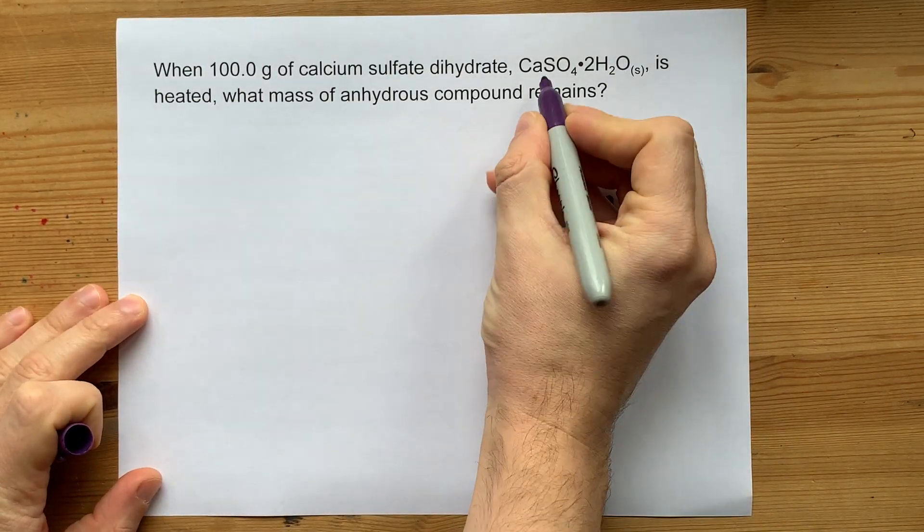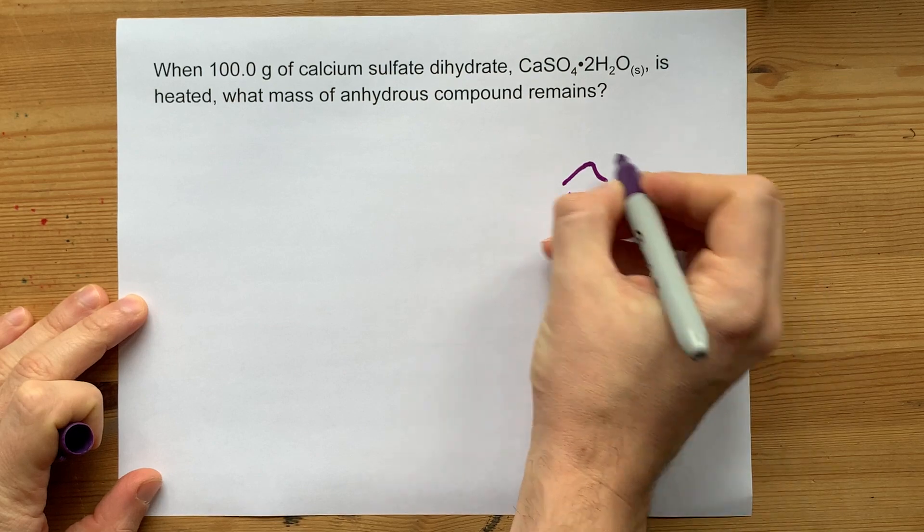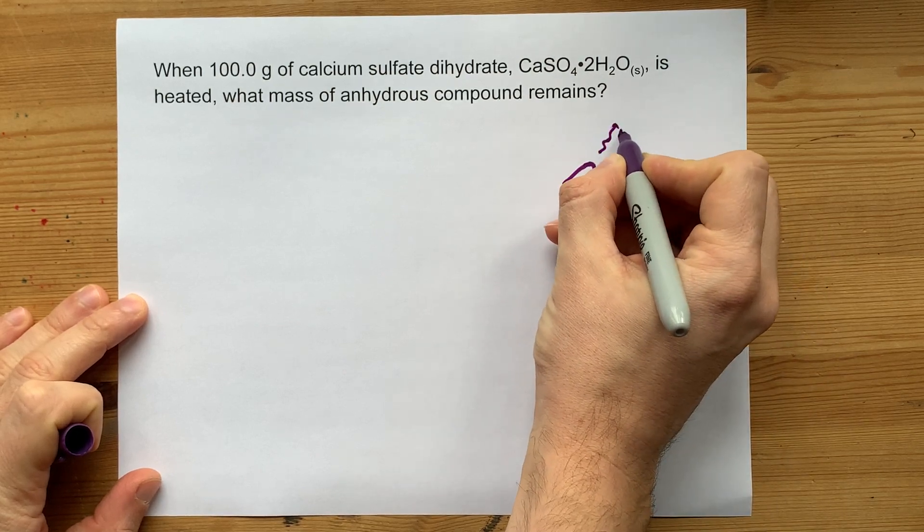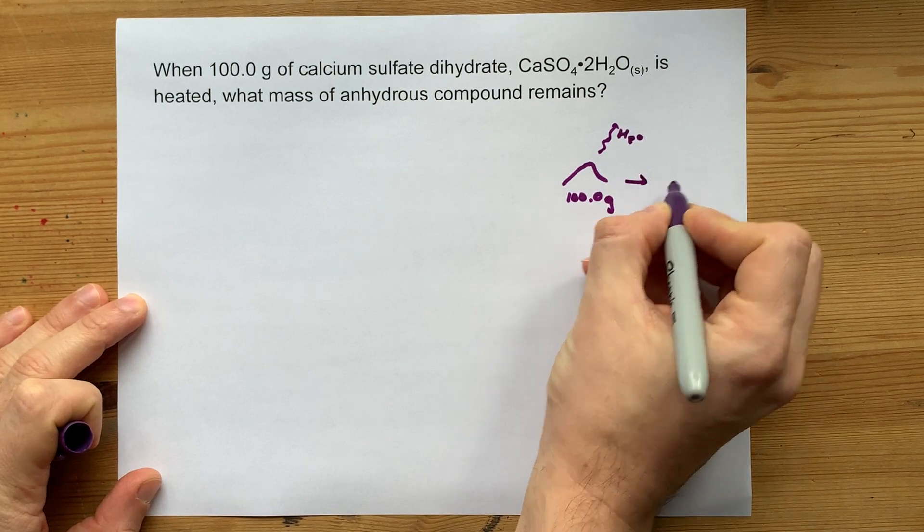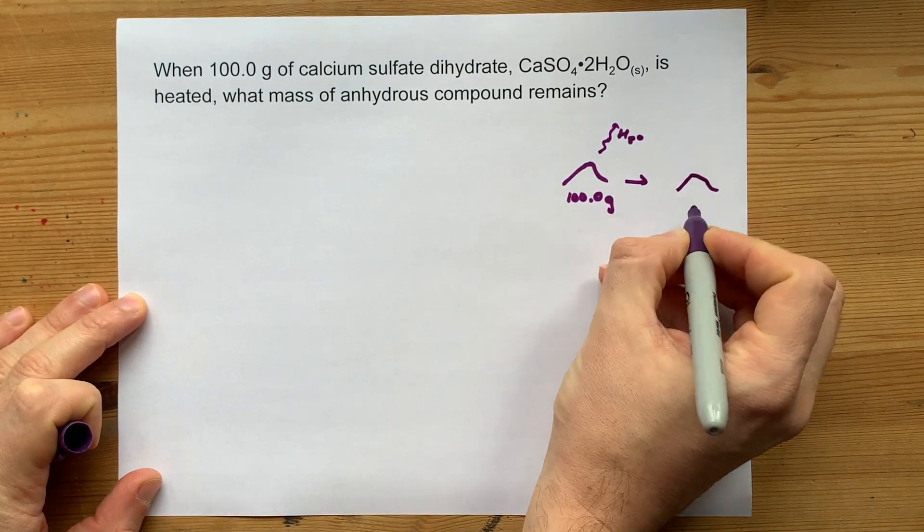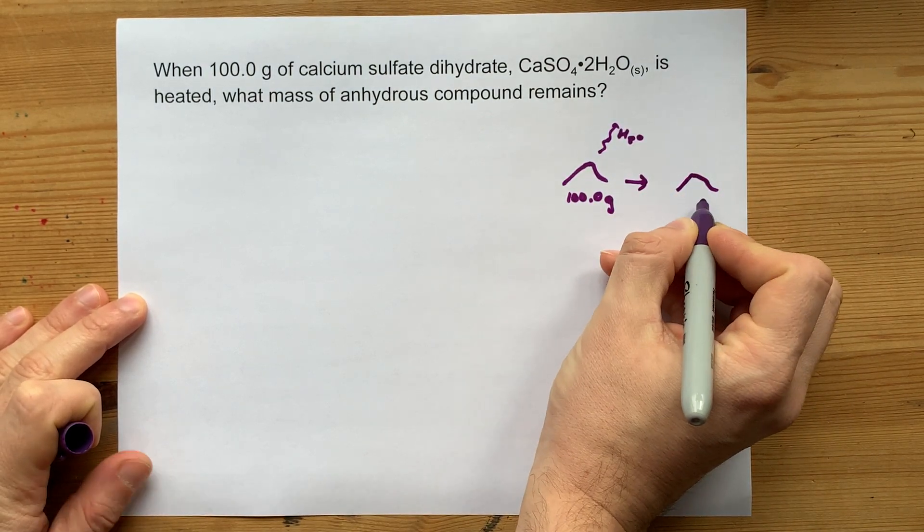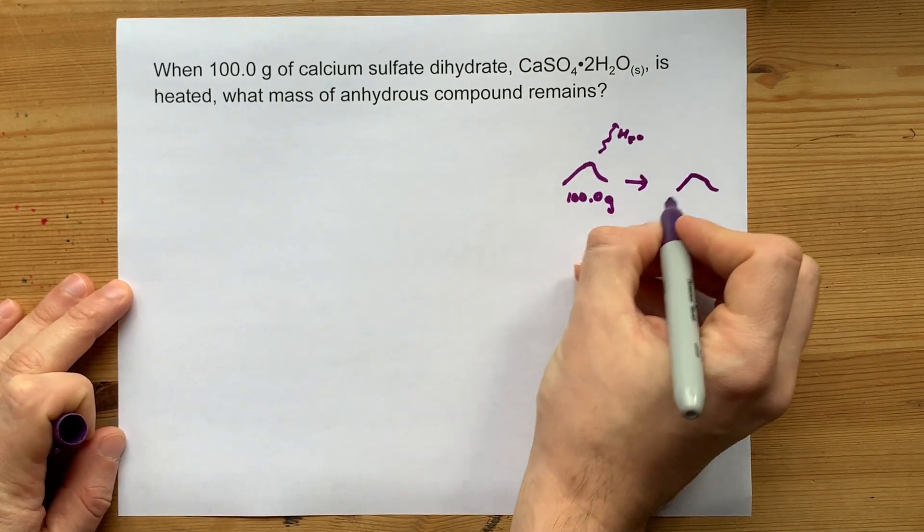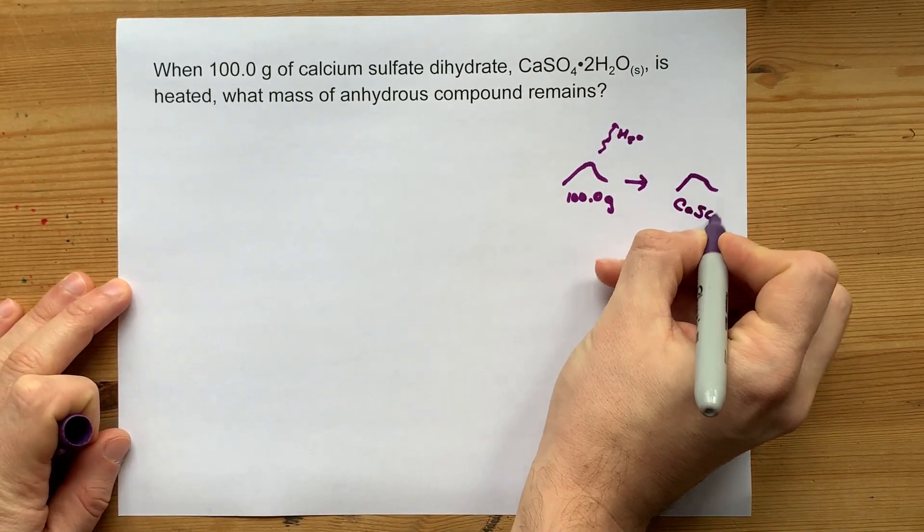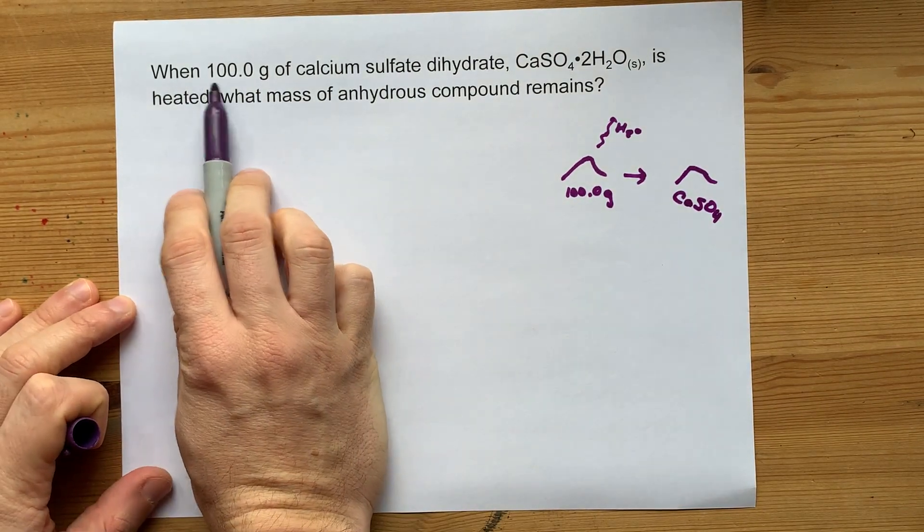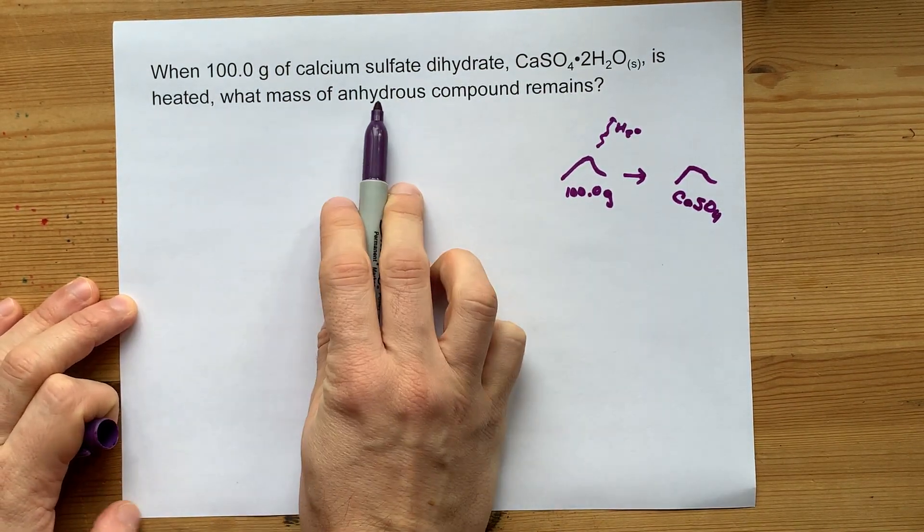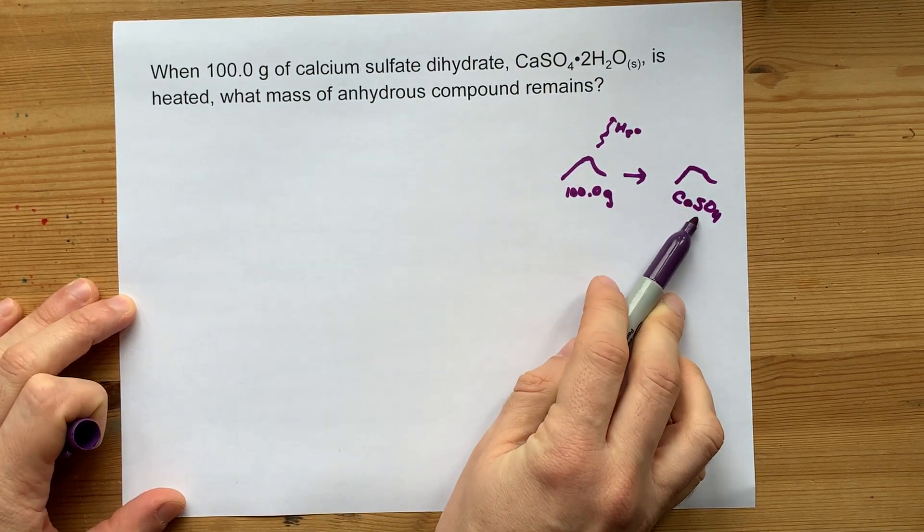When 100 grams of calcium sulfate dihydrate is heated, some of the water is going to evaporate away, or rather all of the water molecules are going to be driven off. You're going to be left with a smaller amount of this anhydrous compound, which is just CaSO4, with no water molecules trapped inside the ionic lattice. When 100 grams of it is heated, what mass of that anhydrous compound remains?